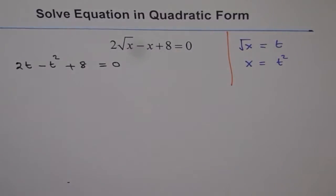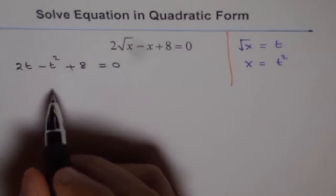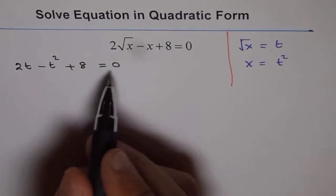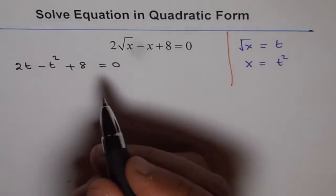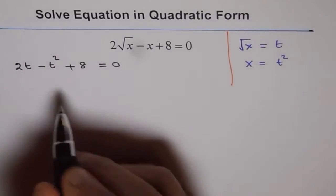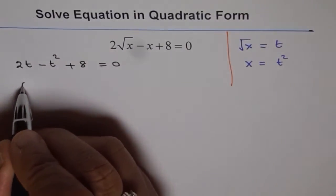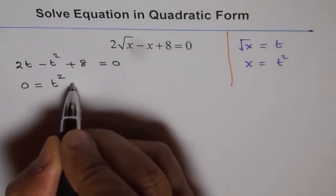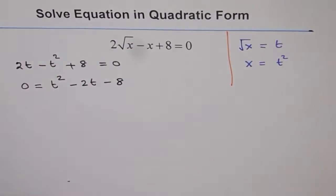Now that's a quadratic equation. Now we'll prefer to write this as positive. So let's multiply by negative both sides or we can say take this to the other side. Either way. So we get 0 equals to t squared minus 2t minus 8, right?